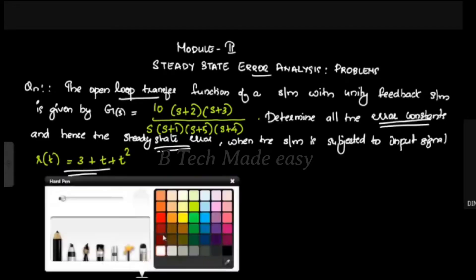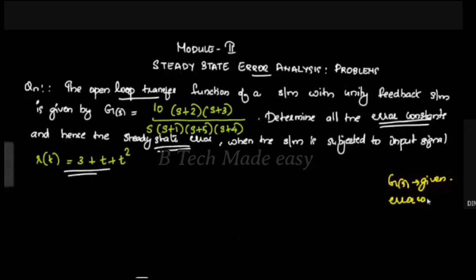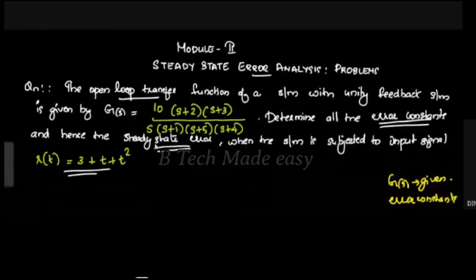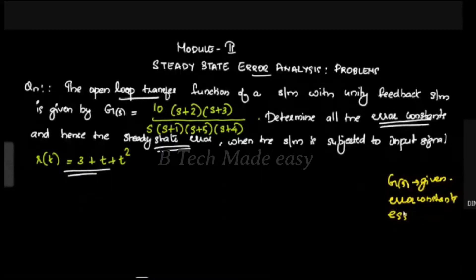The value of G(s) is given as an open-loop transfer function. Find the error constants and the corresponding steady-state errors ESS1, ESS2, ESS3 for each input type. In case 3, there is a step input, and in case 4, there is a ramp input.